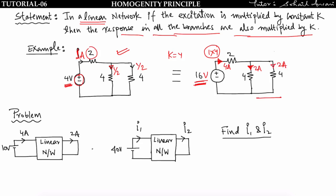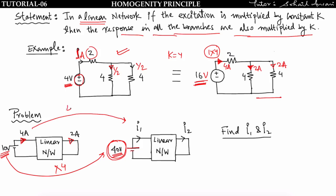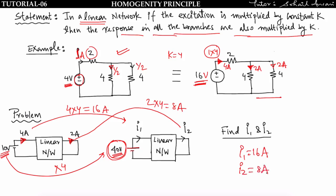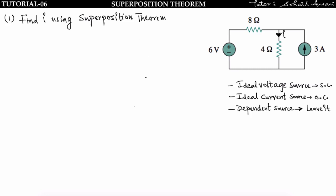Let us solve one more problem based on the homogeneity principle. In a linear network, a 10V input gives i1=4A and i2=2A. If I apply 40V input, the excitation is multiplied by 4 times, so the response is also multiplied by 4 times. Therefore i1 = 4×4 = 16A and i2 = 2×4 = 8A.